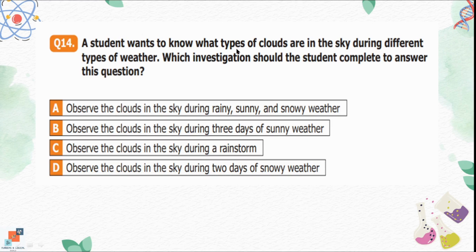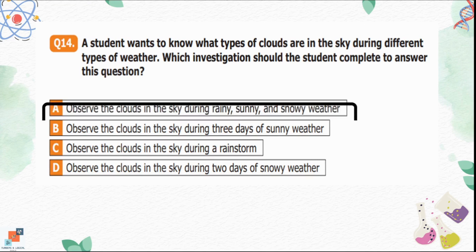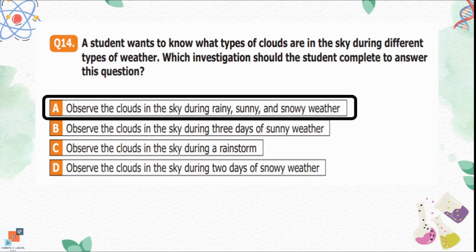Question number 14: A student wants to know what types of clouds are in the sky during different types of weather. Which investigation should the student complete? Option A is observe clouds during rainy, sunny, and snowy weather. Option B is observe clouds during three days of sunny weather. Option C is observe clouds during a rainstorm only. Option D is observe clouds during two days of snowy weather. Option A is correct because observing clouds across three different weather conditions allows the student to see different types of clouds. The other options offer very limited variety.